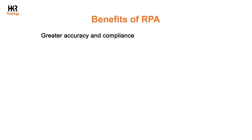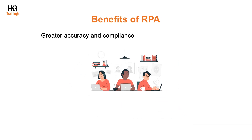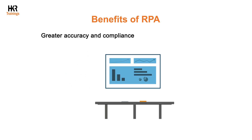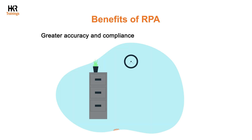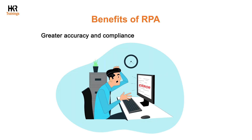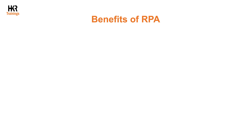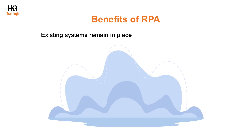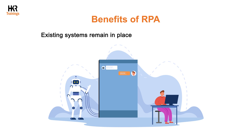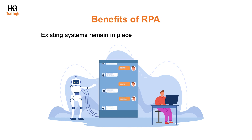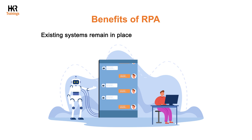Fifth, greater accuracy and compliance — especially when it comes to work that demands accuracy, like meeting regulatory standards, you can eliminate human error by programming RPA robots to follow certain procedures and regulations. Existing systems remain in place, as bots operate on the presentation layer of already existing applications, and RPA software doesn't interfere with underlying systems.